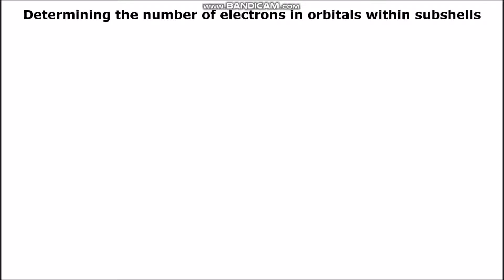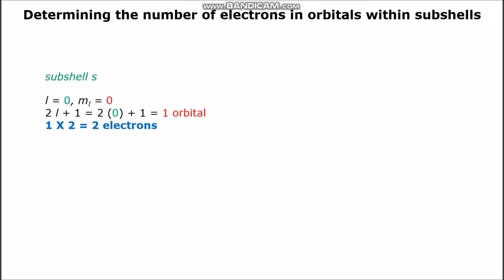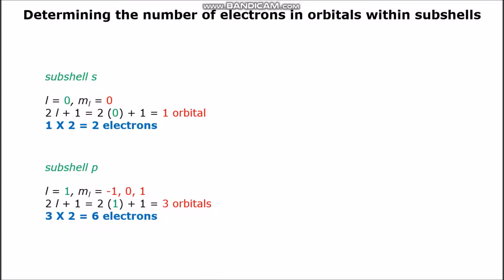Now we can put everything together. We can determine how many electrons are contained in orbitals within sub-shells. Sub-shell S has only a single orbital, so only 2 electrons can be contained within sub-shell S. For sub-shell P, there are 3 orbitals. So if one orbital contains 2 electrons, then the 3 orbitals contain 3 times 2 equals 6 electrons.